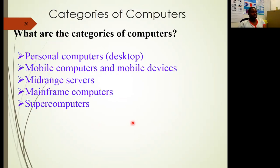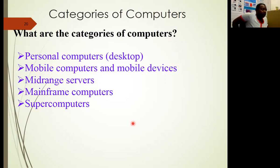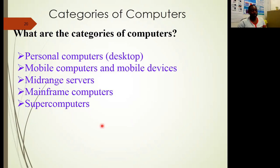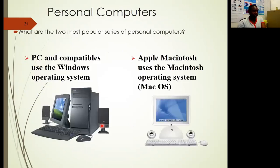What are the types of computers that we use? We have personal computers — desktops and laptops — mobile computers and mobile devices. Then mid-range servers, which are slightly bigger. Mainframes, which are bigger than all the normal desktop computers. And we also have supercomputers, which are used for more specific applications.